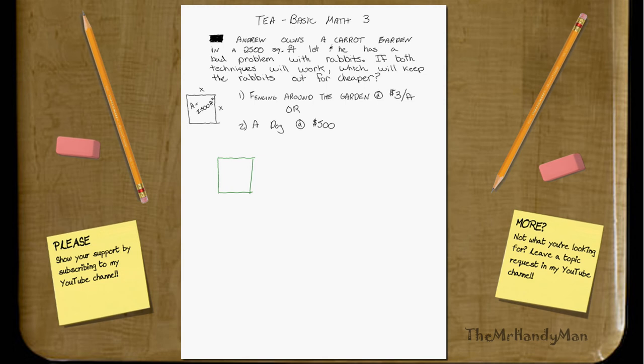And since it's a square lot, we know that the sides are equal. So therefore, you'll find that x times x, or x squared, is equal to 2500.